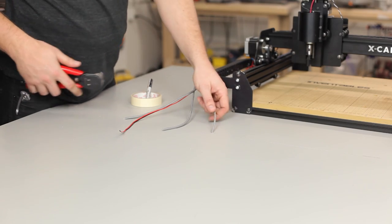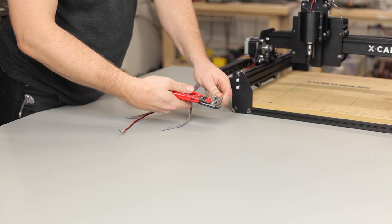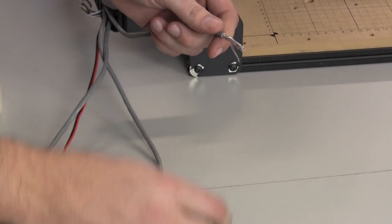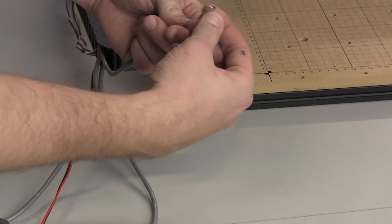Now we'll strip the stepper wire from all of the stepper motors. Trim off the shielding and the ground wire and the string that are inside the jacket.